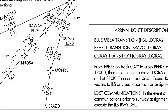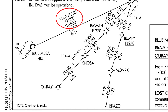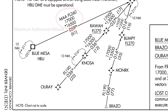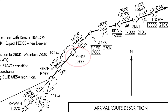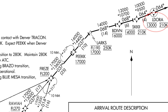The Blue Mesa transition has a maximum altitude restriction of flight level 260, meaning you cannot fly above that altitude. From FREEZE, track a heading of 037 to PEAK, then it's on to ELDORA at flight level 130 with a speed restriction of 210 knots. Remember ELDORA is a flyover point because of the symbol being used. From there, fly a heading of 064 and ATC will vector you the rest of the way to the runway.